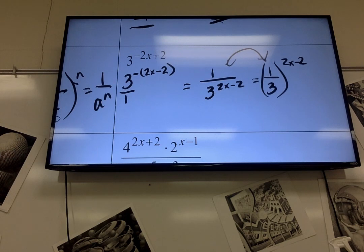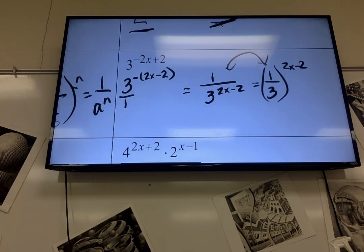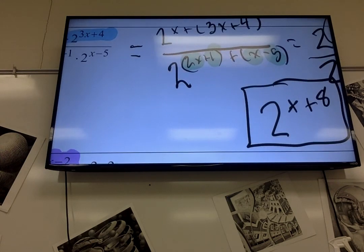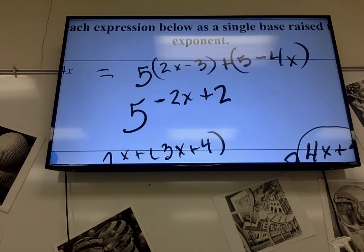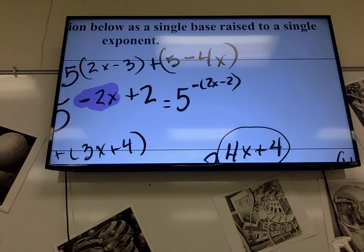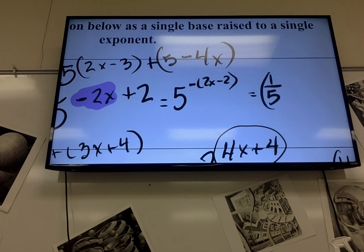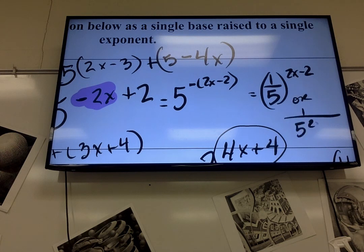So now that we know if you have a number in front of the variable that's negative, you really need to get rid of it, we can go back up to the very first one. And notice that's negative. We didn't do anything with it yesterday because we hadn't talked about that rule yet. So what I can do is factor out a negative, so it's 2x minus 2. I know that's really 5 over 1, so I can make that 1 over 5 to the 2x minus 2, or 1 over 5 to the 2x minus 2. Same thing. So those are better answers.